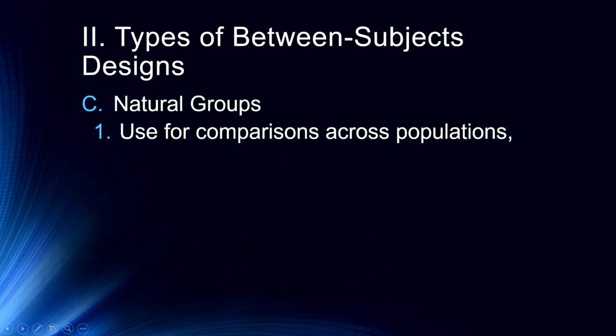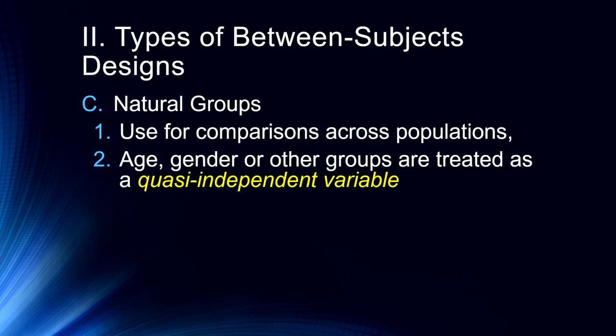Finally we have natural groups designs. This is when we're going to compare across populations. So we're interested in gender differences, in aging, something like that. So we're going to use gender, age, or other groups as a quasi independent variable. And again this is dependent on the kind of study you might be doing. So we often slice up our participants into younger adults and older adults, or younger adults, older adults, and elderly, males and females. We might also in some studies look at gay males, heterosexual males, heterosexual females, and lesbian females as four different groups. And in fact I've seen that done in a variety of cognitive tasks looking at biological underpinnings of sexual orientation.